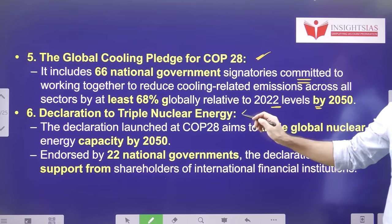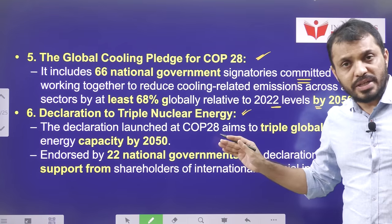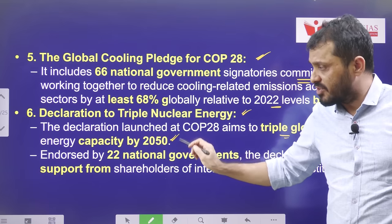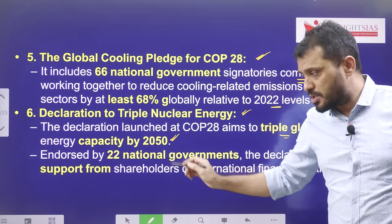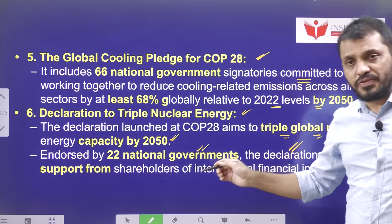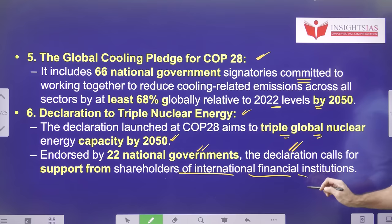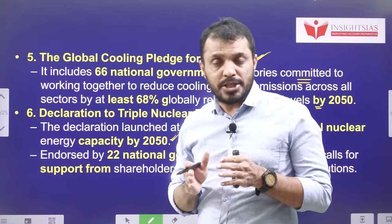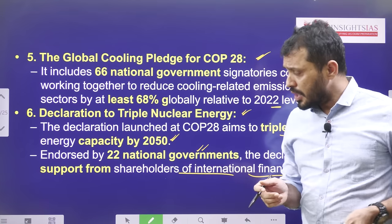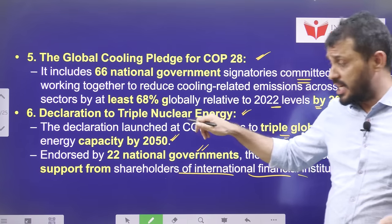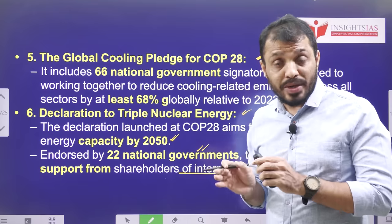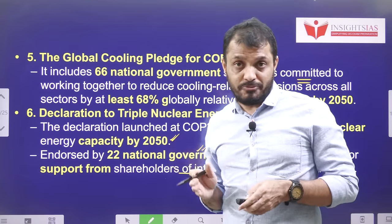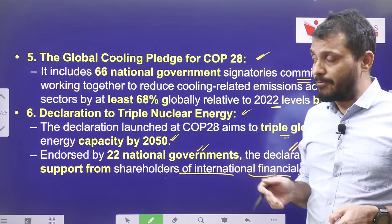The sixth highlight is the Declaration to Triple Nuclear Energy. COP28 is aiming to triple global nuclear energy capacity by 2050. It was endorsed by 22 governments, who called for support from international financial institutions for funding the setup of nuclear energy plants. India is also concentrating on nuclear energy — notably, India had a civil nuclear agreement with the USA made back in 2008 during the UPA-1 government.